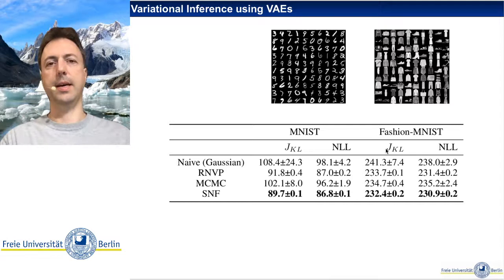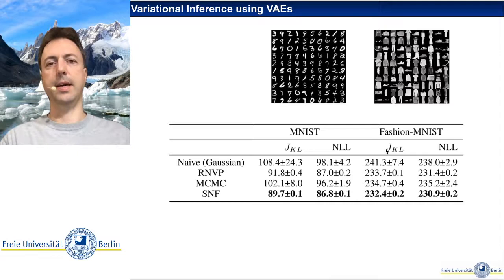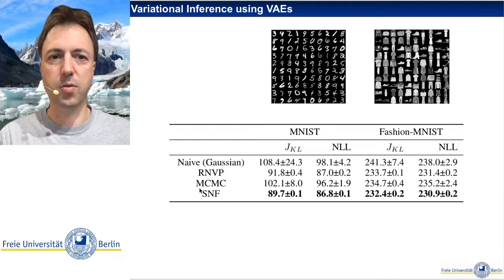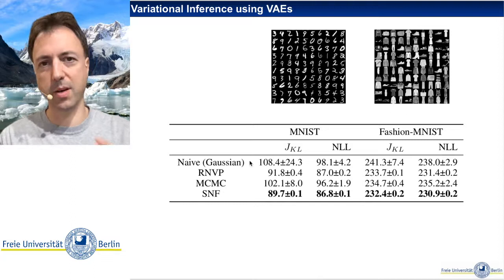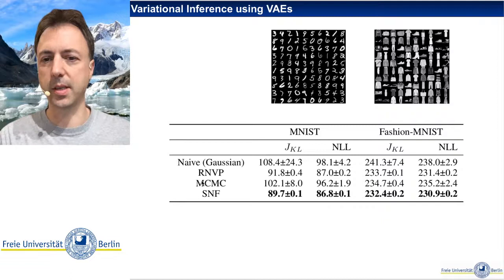Finally, we also use stochastic normalizing flows to improve the variational bound of variational autoencoders, compared to the naive implementation with a Gaussian in latent space, a deterministic normalizing flow in latent space, and plain Metropolis Monte Carlo in latent space. And with this ends my summary of stochastic normalizing flows. Thank you for your attention and see you soon in another lecture.